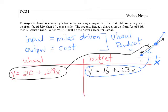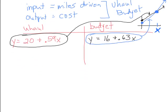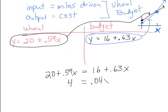So if these two equations represent cost, the point where they are equal to one another will be the point where it transitions from one to the other. So let's set these two equations equal to one another. We'll say 20 plus 0.59x is equal to 16 plus 0.63x. And if we're solving this for x I'll subtract 16 from both sides and then I'll subtract 0.59x from both sides. And then I solve for x by dividing by 0.04 and I get an answer of 100 equals x.